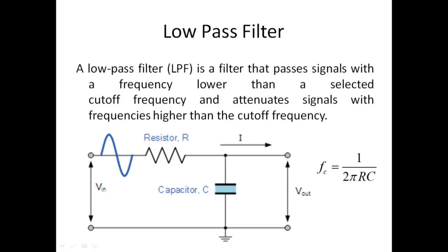As you can see in the circuit, it is a very simple circuit — just one resistor and one capacitor — and the output is taken across the capacitor. Now let's understand how this actually works like a low-pass filter.